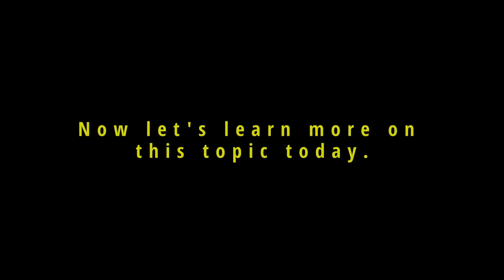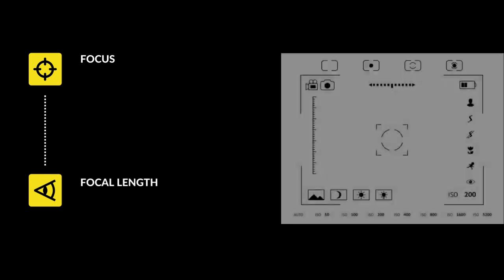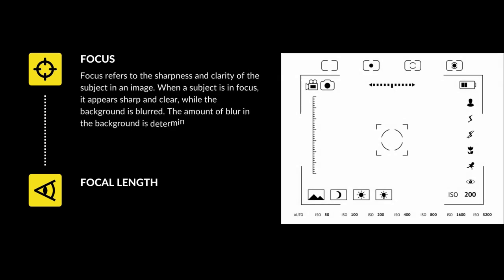Focus and focal length are two key concepts in photography that work together to determine the look and feel of an image. Focus refers to the sharpness and clarity of the subject in an image — when a subject is in focus, it appears sharp and clear while the background is blurred.